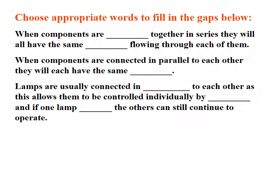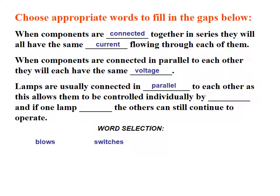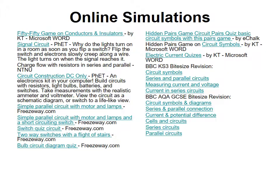In summary: when components are connected in series they all have the same current flowing through each of them. When components are connected in parallel they all have the same voltage. Lamps are usually connected in parallel as this allows individual control by switches, and if one lamp blows the others can still operate. There are also some online simulations which would be useful for revision.